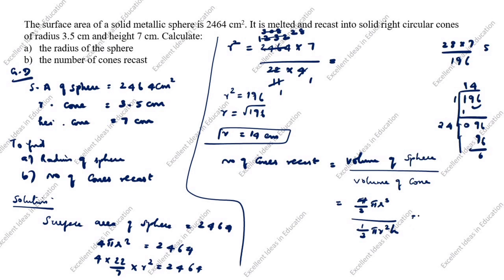The 3s cancel and π cancels, leaving 4 × r³ divided by r²h. Substituting r = 14 (radius of sphere), cone radius = 3.5, and cone height h = 7: we get 4 × 14³ divided by (3.5)² × 7.